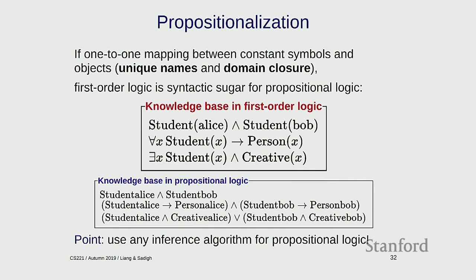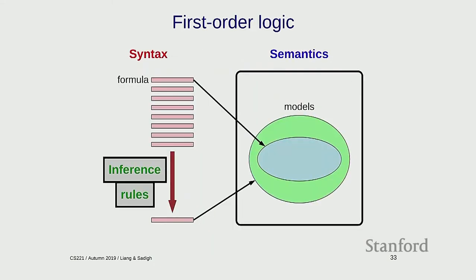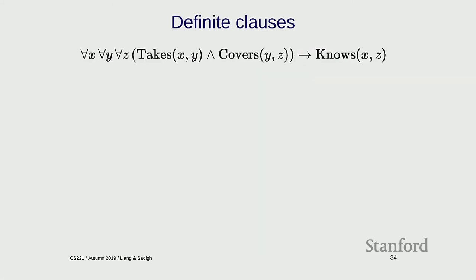The point of propositionalization is that you can now use any inference algorithm for propositional logic on first-order logic. If you're willing to make the unique names and domain closure restrictions, you have direct access to all objects via constant symbols and reduce to propositional logic. First-order logic still has value as syntactic sugar for convenience. Later we'll see cases where you won't be able to do this propositionalization. Now let's talk about inference rules — starting with first-order logic with horn clauses using a generalization of modus ponens, then moving to full first-order logic and the generalization of resolution.